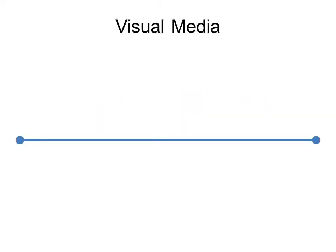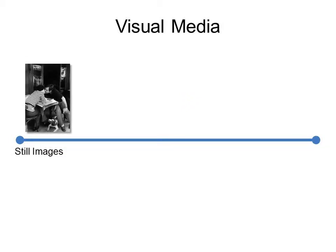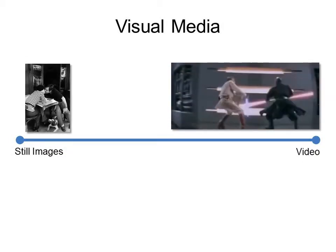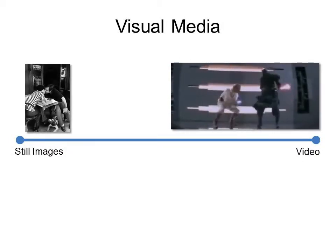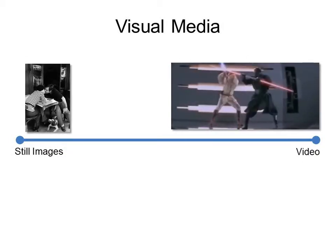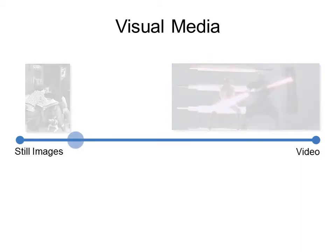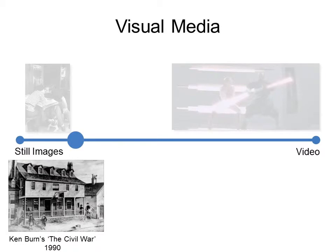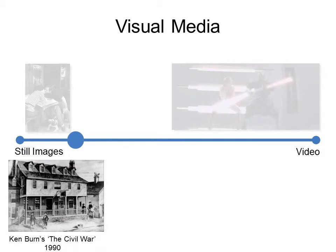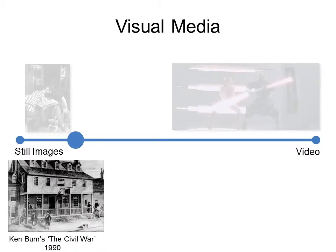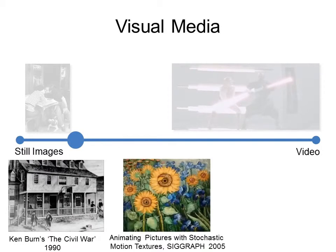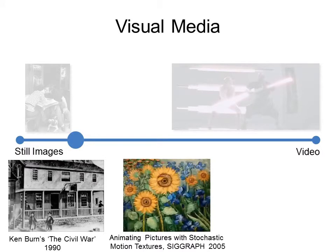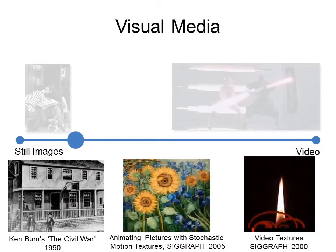Visual media can most often be classified into either stills, such as photographs, or dynamic media, such as video. Recently we have seen a number of examples that are much like stills but contain some dynamic elements. These range from panning and zooming over a still image — the so-called Ken Burns effect — to adding animations to still paintings, to creating video textures.